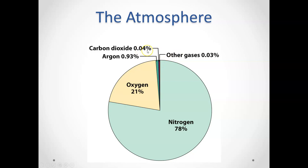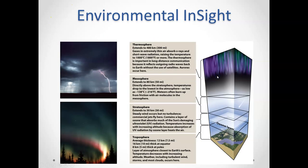Less than half a percent of the atmosphere is carbon dioxide, and then three-tenths of a percent consists of what we call other gases. Interestingly, especially in our next discussion of global atmospheric changes, we're going to spend a lot of time talking about these last two categories.